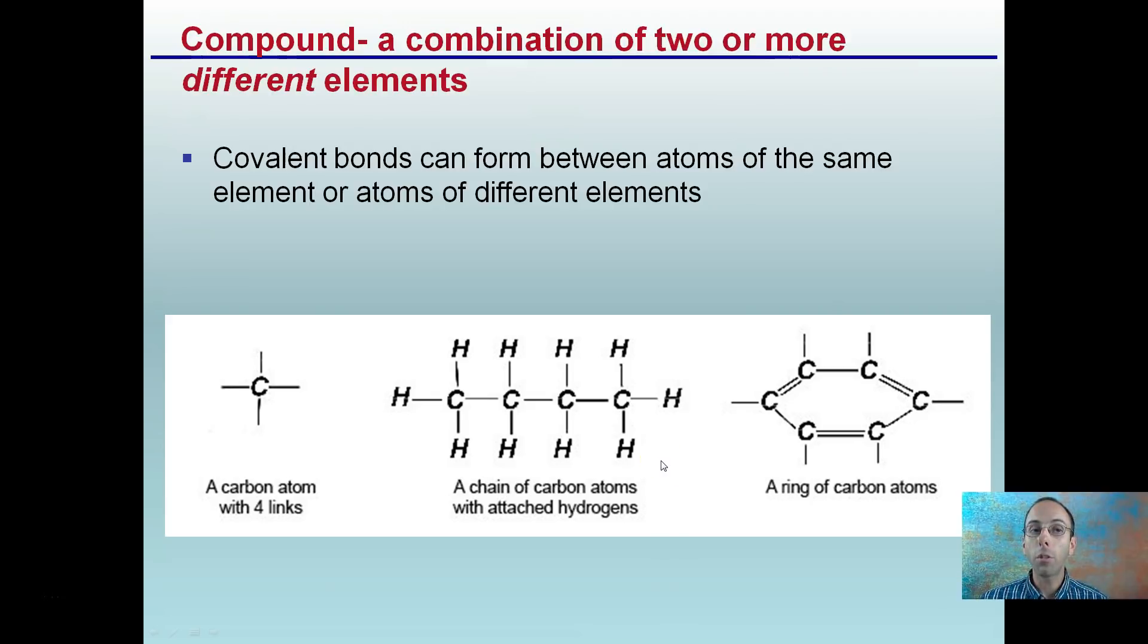Compound is a combination of two or more different elements. So covalent bonds can form between atoms of the same element or atoms of different elements. And we see that located here with our carbon binded to our hydrogen. Carbon binded to other carbons. These we will assume are hydrogens. This gets very important when we start looking at structure and shape and macromolecules. So this is kind of just that understanding of what's going on at the molecular level here.